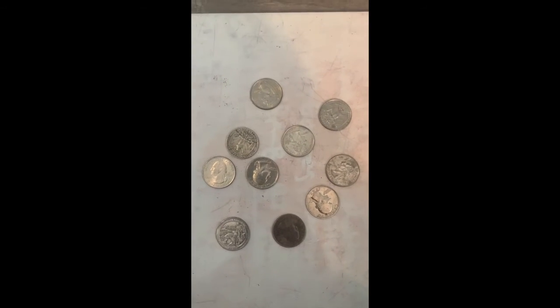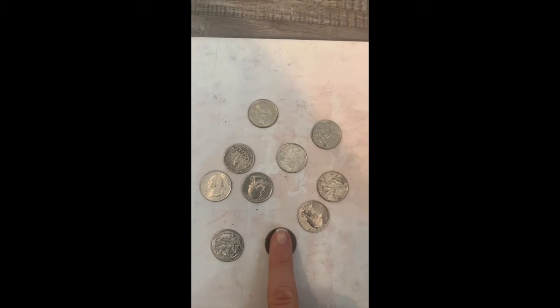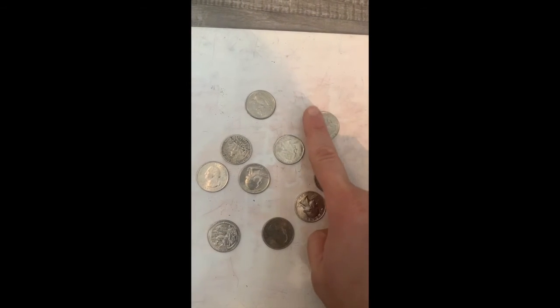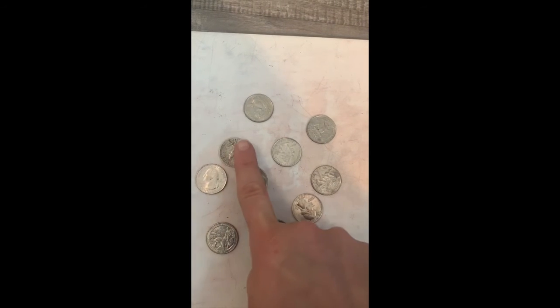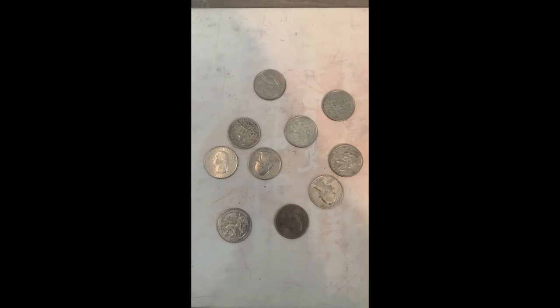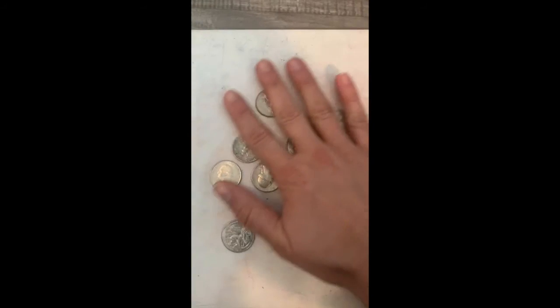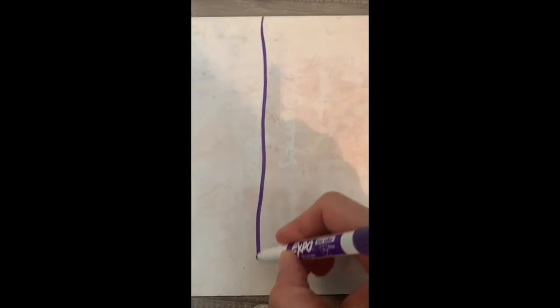So we're going to use our collections of objects — you only need 10 of them today. Grab 10 objects and meet me back here, and we are going to figure out all of the different ways that we can make 10. So I have my 10 quarters. Let's count them to make sure I have 10: one, two, three, four, five, six, seven, eight, nine, ten. You're also going to need a piece of paper, and I want you to draw a line down the middle.